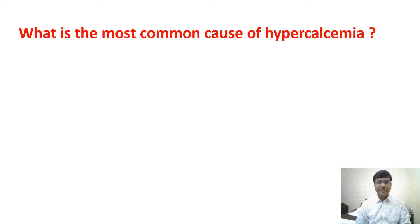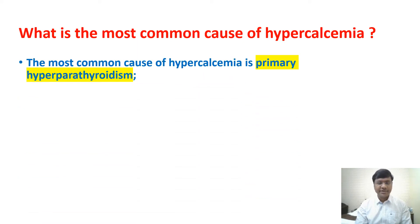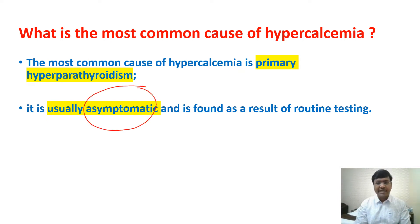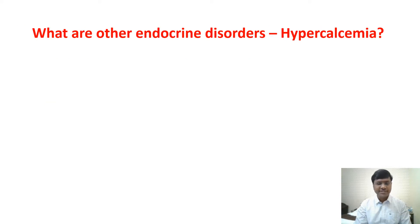The most common cause of hypercalcemia is the endocrine disorder hyperparathyroidism, specifically primary hyperparathyroidism. The most common cause of primary hyperparathyroidism is parathyroid adenoma. This hypercalcemia is usually asymptomatic and is often found as a result of routine testing.